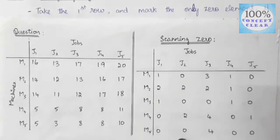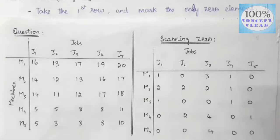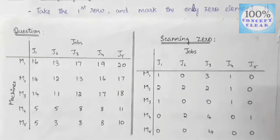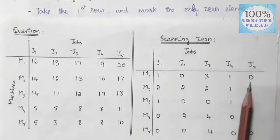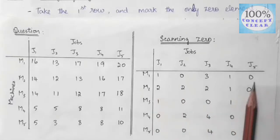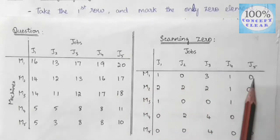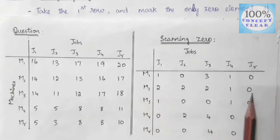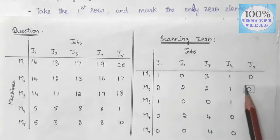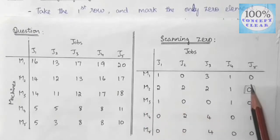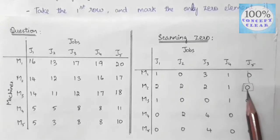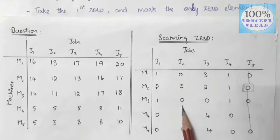This is the special case. The row reduction and column reduction are already done. Now we start assigning. We look at the first row — it has a single zero, so we mark it and cancel that column. For the second row, we skip it. The third row has 2 zeros, so we skip it. The fourth row has 2 zeros, so we skip it. The fifth row has 3 zeros, so we skip it.